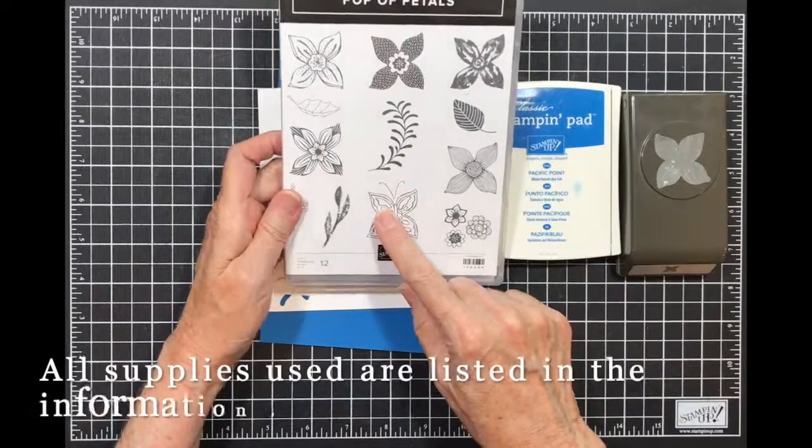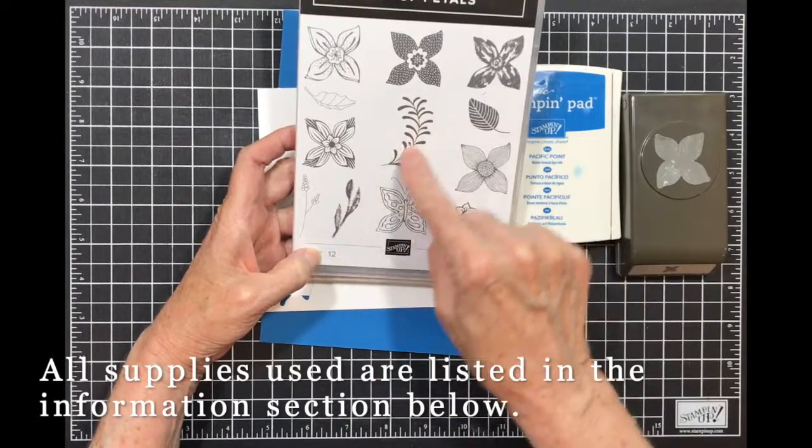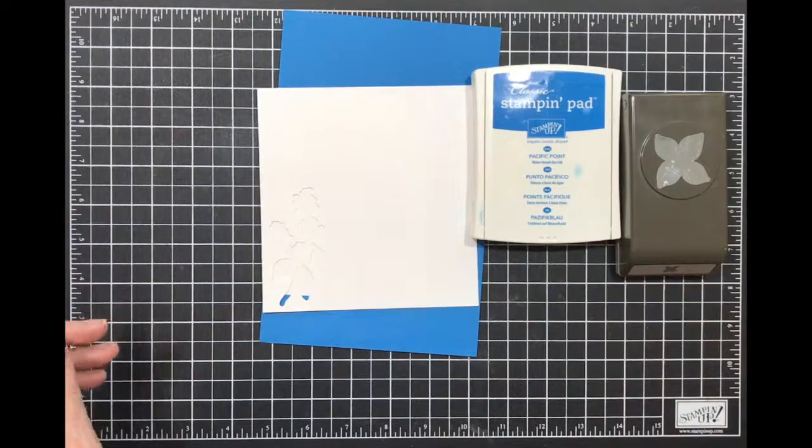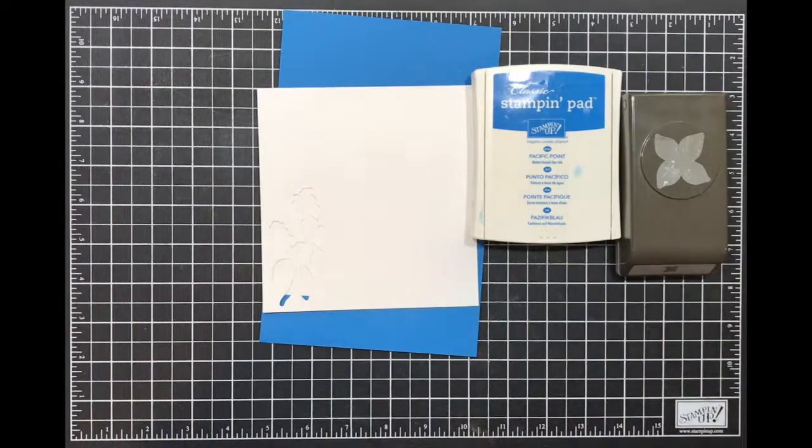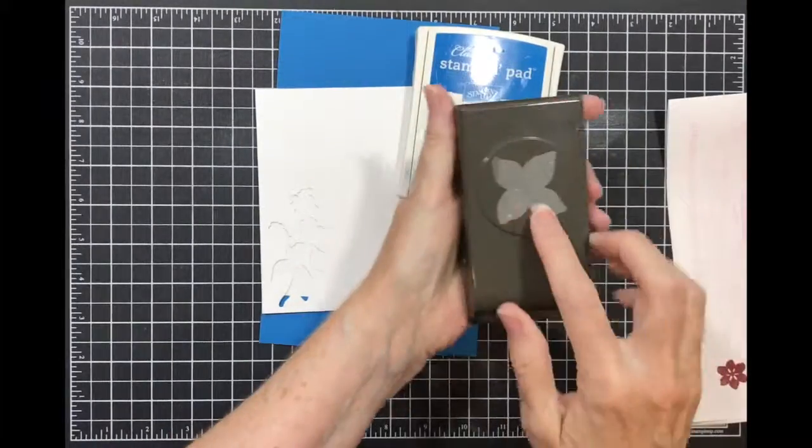For my card today I'm using Pop of Petals and I'm going to use the butterfly, this spray, this spray, and this spray. I will be doing some off-stamping so I'm pulling in a scrap of paper. I'm also using the coordinating punch.